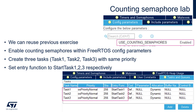Now we will try to check it in practice. We can reuse a previous exercise to save some time. Within STM32CubeMX or STM32CubeIDE, please select FreeRTOS in version CMSIS OS version 2. Within its config parameters, please enable UseConfigSemaphores.